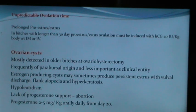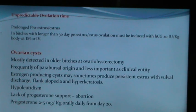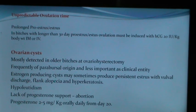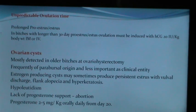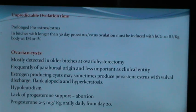Hypoleuteidism is a problem where lack of progesterone support results in abortion. Progesterone 2 to 5 mg per kg can be administered orally daily from day 20 of gestation.